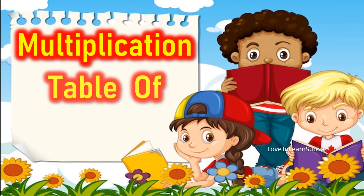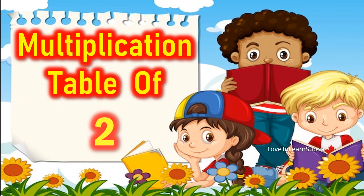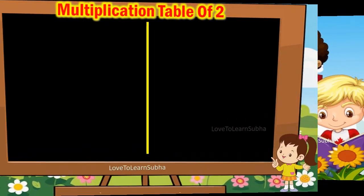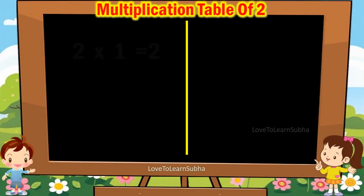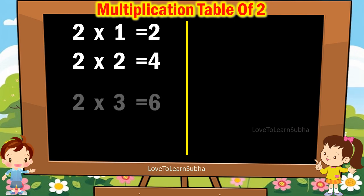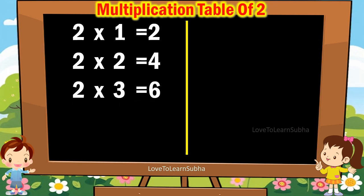Multiplication table of 2. 2 1s are 2, 2 2s are 4, 2 3s are 6.